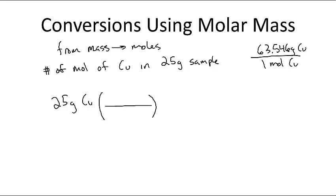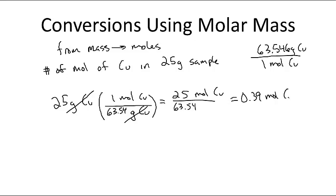So now I'm getting rid of grams so I need grams to go on the bottom so I put grams of Cu down here and I know that my conversion factor or my ratio is 63.54 grams to one mole. So grams cross out and here now I have 25 moles of Cu divided by 63.54 and so I get 0.39 moles of Cu.